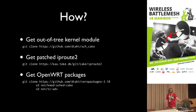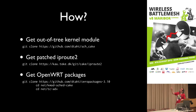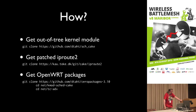How do you get hold of it? The latest version is out of tree as a kernel module. You also need a patched iproute2 to understand how to configure it and get the statistics out of it — there are a lot of statistics. It's also available as OpenWRT packages if you want to experiment with it on your cheap consumer routers. The presentation will be uploaded so you can look at these URLs at your leisure.